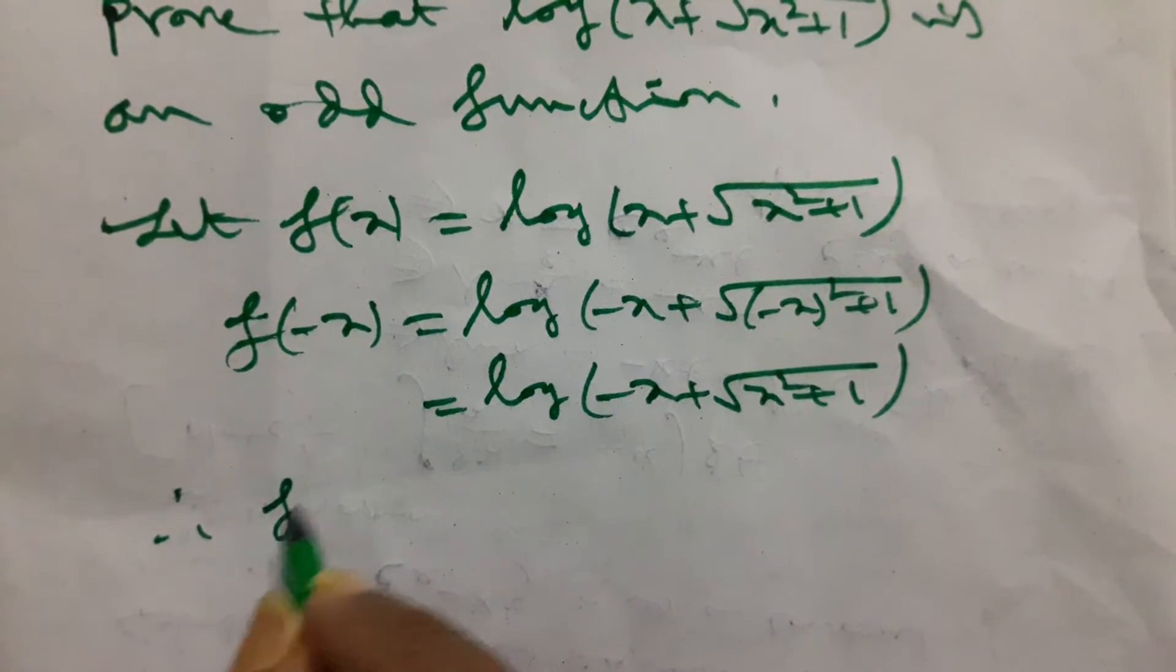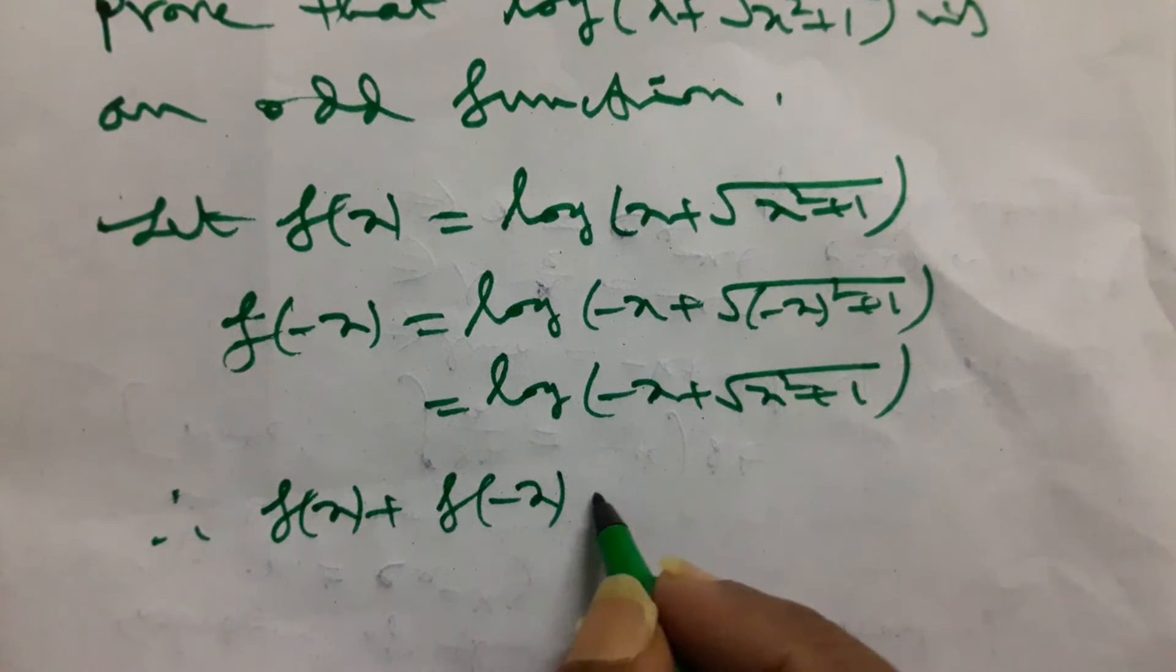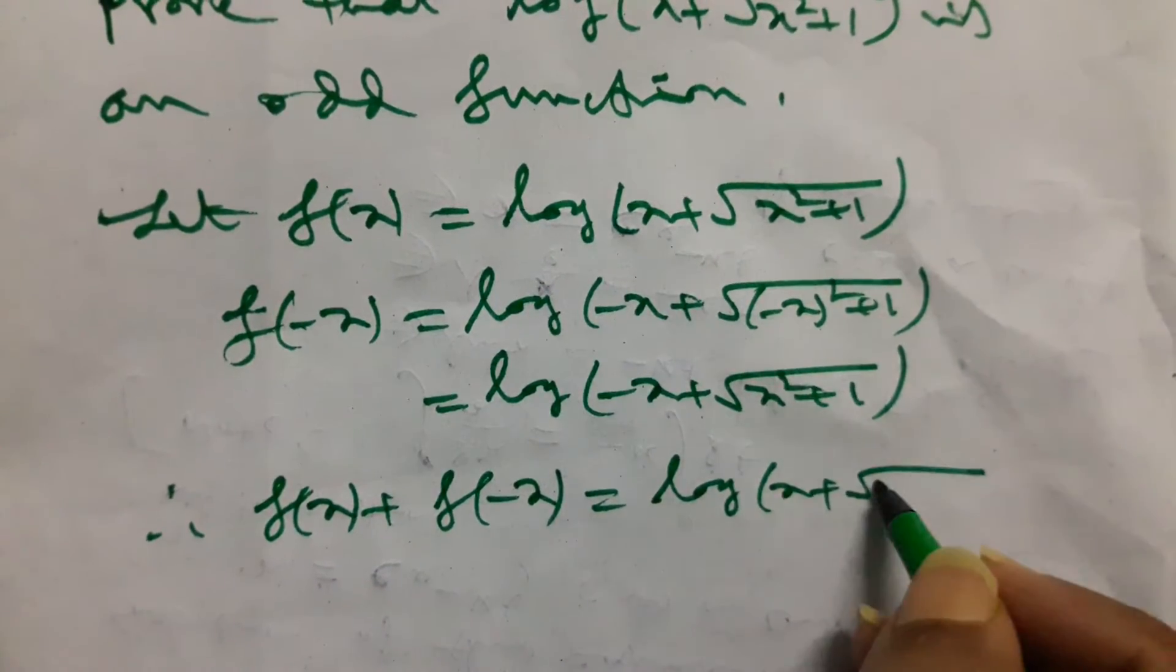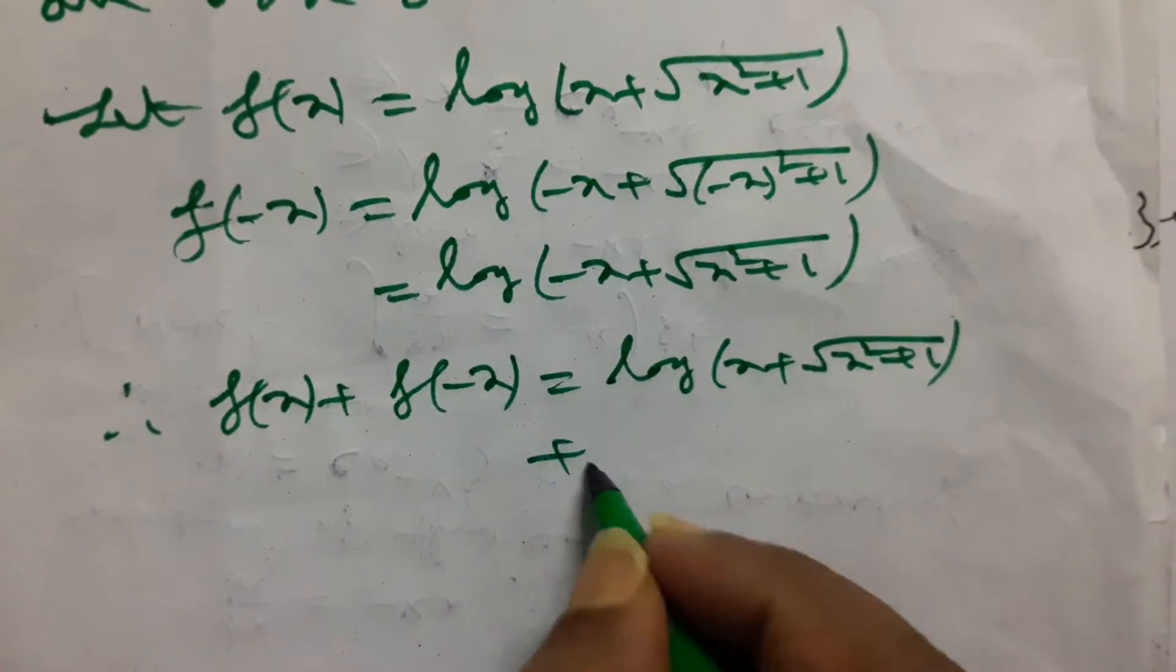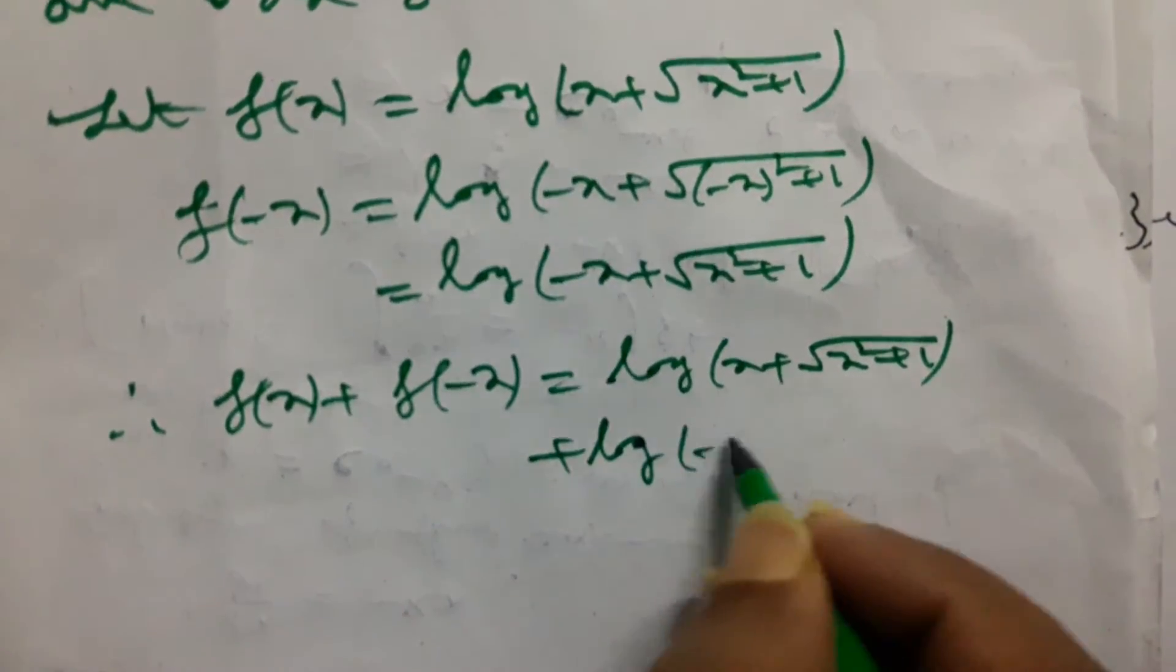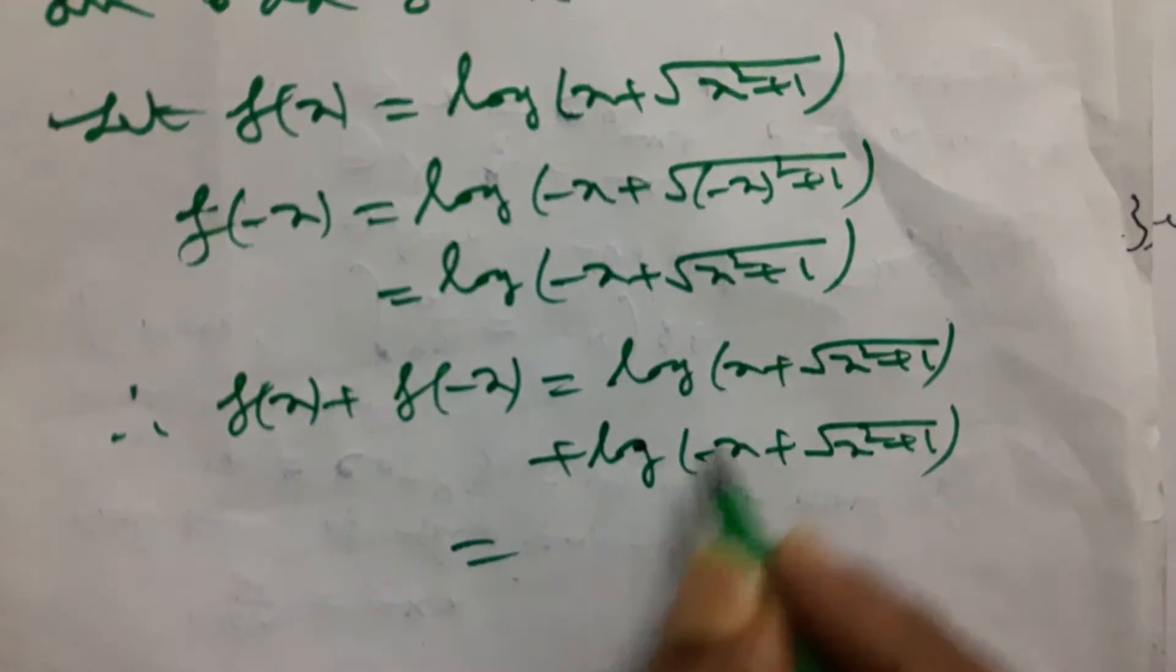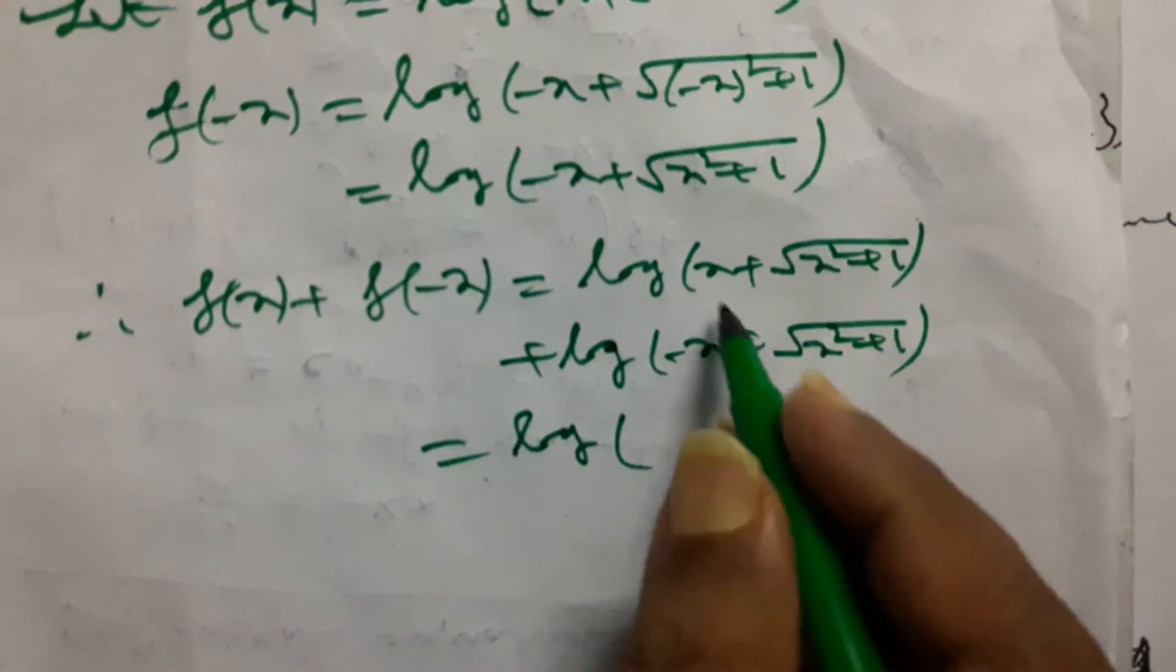Therefore, f(x) plus f of minus x, that will be log of x plus root over of x square plus 1, plus log of minus x plus root over of x square plus 1. By property of logarithm, by definition, product of these two.